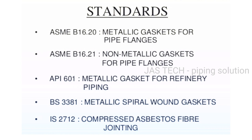Gasket standards: ASME B16.20 - Metallic gasket for pipe flanges. ASME B16.21 - Non-metallic gasket for pipe flanges. API 601 - Metallic gasket for refinery piping. BS3381 - Metallic spiral wound gaskets. IS2712 - Compressed Asbestos Fiber Jointing.